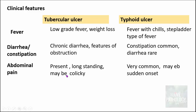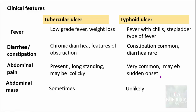Abdominal pain is usually long-standing in the case of tubercular ulcers and sometimes can be colicky. Whereas abdominal pain is the most common presentation in typhoid ulcers and may be sudden in onset, especially when there is perforation. Abdominal mass is not a usual presentation in either, but tubercular ulcers can sometimes present as an abdominal mass — particularly in the hypertrophic or ulcero-hypertrophic variant of tuberculosis. Ascites is more common in tubercular ulcers and is unlikely in the case of typhoid ulcers.